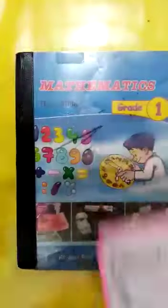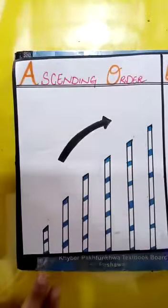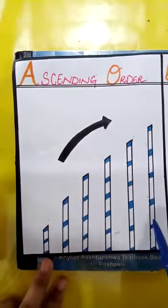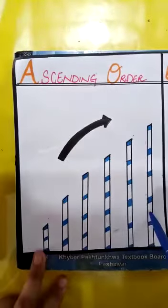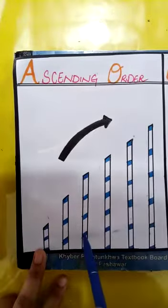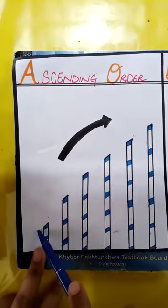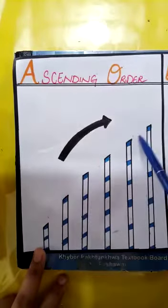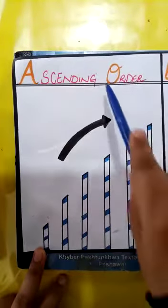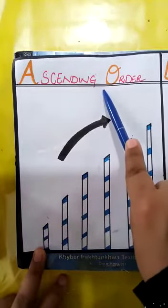Look at this comparison. Here I have this straw-like structure. This one is the bigger. Ascending order.